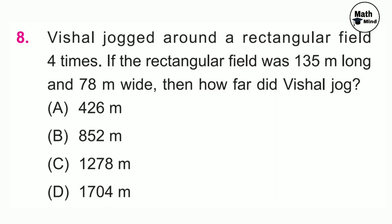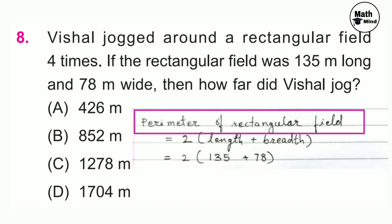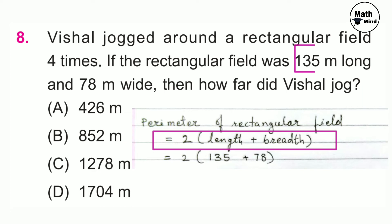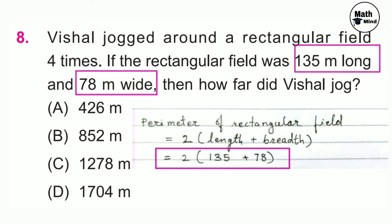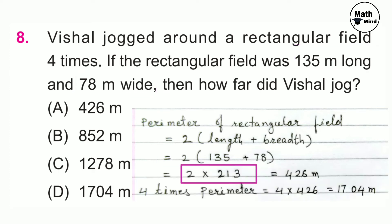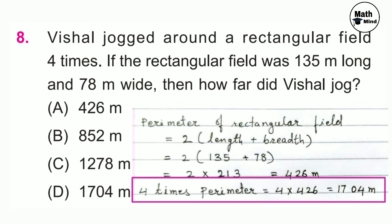Question number 8: Sheetal will jog around a rectangular field 4 times. The field is 135 m long and 78 m wide. How far did she jog? Perimeter of a rectangular field = 2 × (length + breadth) = 2 × (135 + 78) = 2 × 213 = 426 m. Jogging 4 times: 4 × 426 = 1704 m. Option D is correct.